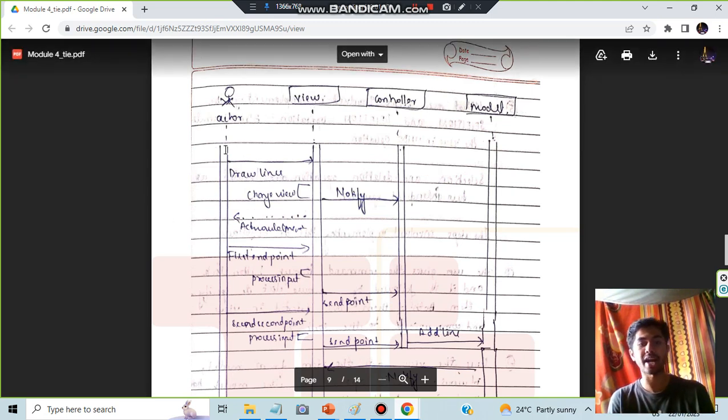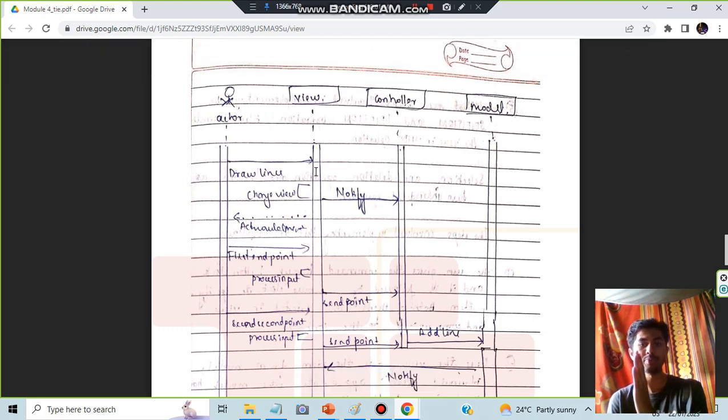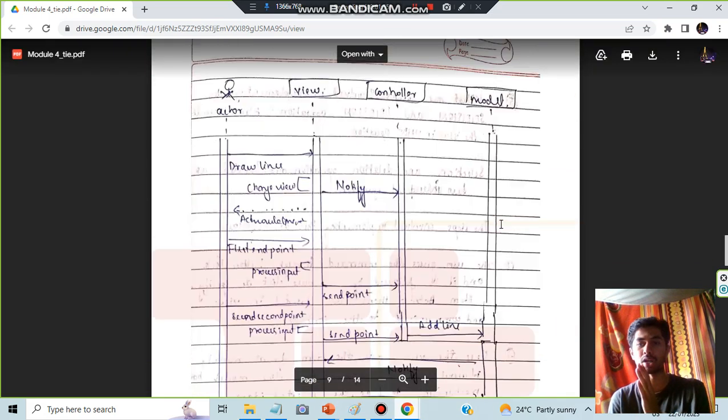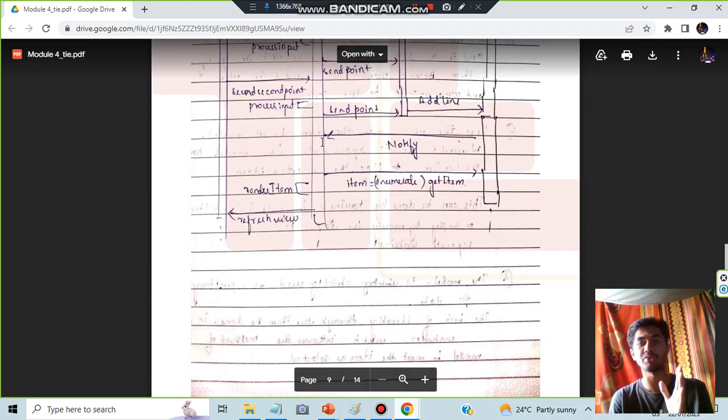You will be starting from the actor, he will be sending a draw line to the view and the view will be notifying it to the controller and the acknowledgement will come and the first endpoint will be sent and the second point will be sent here and the add line will happen. And then the second line will also be sent and that will also be handled and the model will make all the changes and then notify directly to the view.